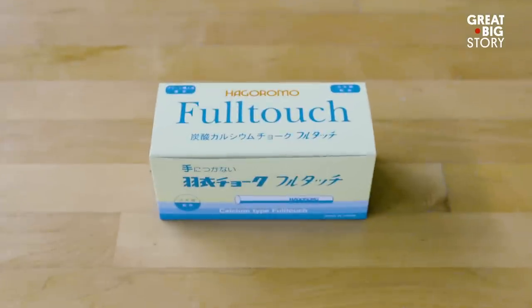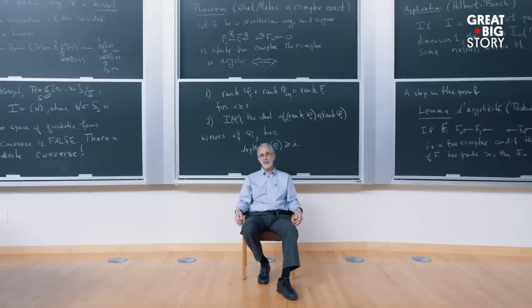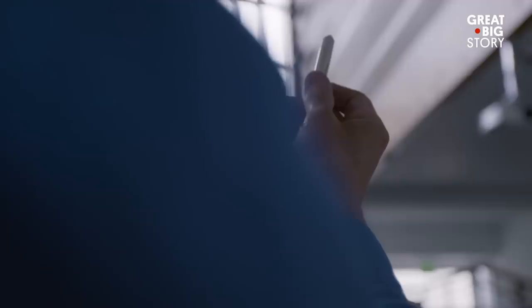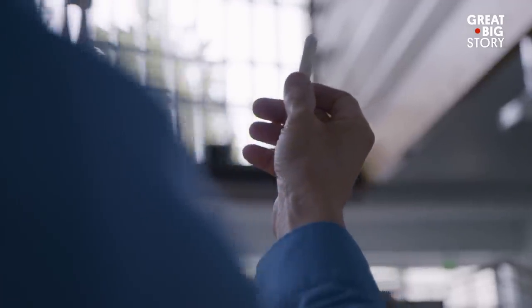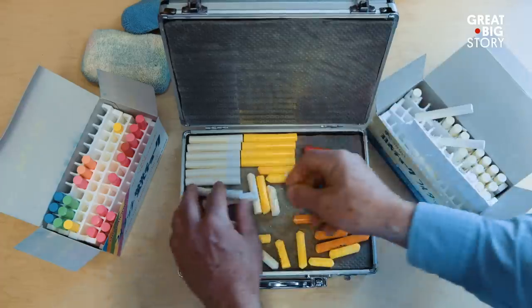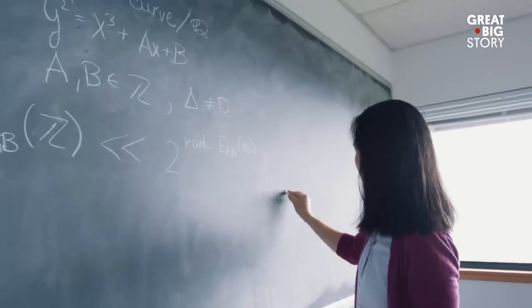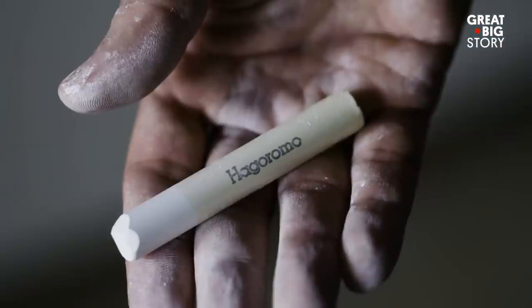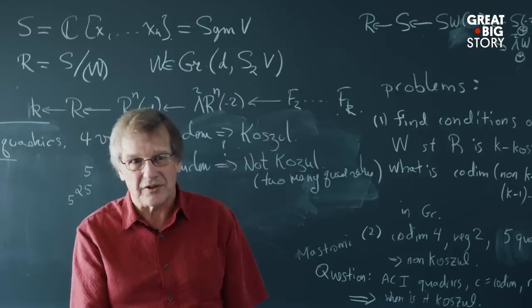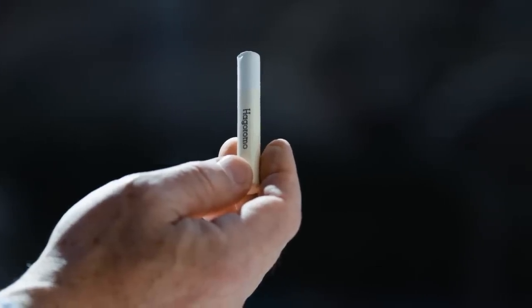The legend around this chalk is that it's impossible to write a false theorem. I assume the special ingredient is angel tears. Mathematicians from all the top schools very frequently use it. It's a cult favorite. As soon as I used it, I was a convert. The chalk is one of the best-kept secrets in the math world. It's the Rolls-Royce of chalk.